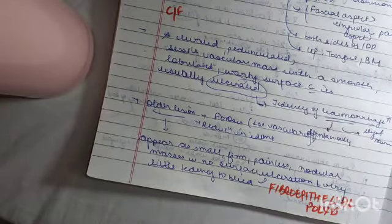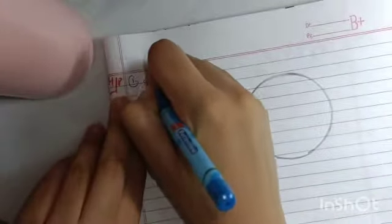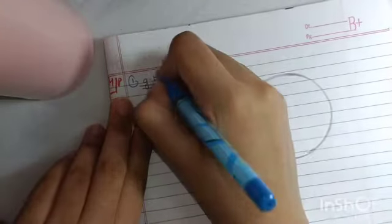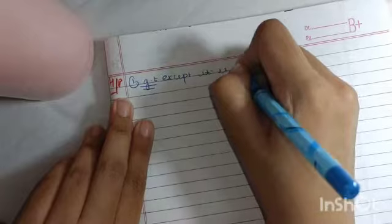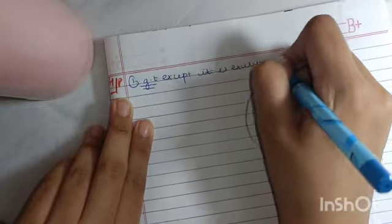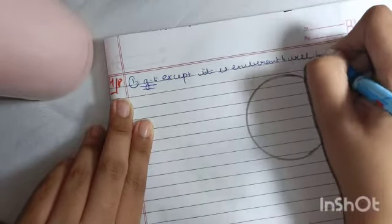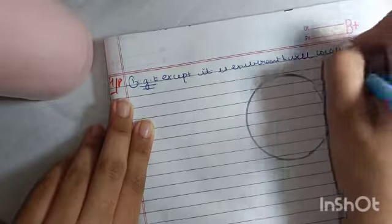Now let's talk about the histopath. Now histopath is very important and very characteristic and it's quite easy to remember. Now first of all, the very significant point is it resembles a granulation tissue except it is exuberant and well localized.